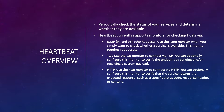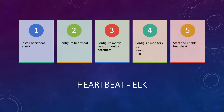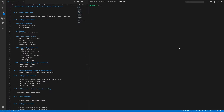The HTTP monitor can also be optionally configured to check for specific responses or status codes from your endpoints. There are five steps to install Heartbeat: first, install the heartbeat-elastic package; second, configure the Heartbeat service; third, configure Metricbeat to monitor our Heartbeat instance; fourth, configure our monitors - HTTP, ICMP, and TCP; and finally, start and enable the Heartbeat service.